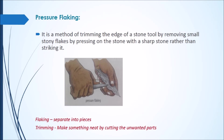The second method is pressure flaking. It is a method of trimming the edge of a stone tool by removing small stony flakes — that is, very small unwanted particles. They do this trimming by pressing on the stone with a sharp stone rather than striking it. So instead of striking the core stone, they use a sharp stone and press over the core stone to reshape it.